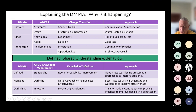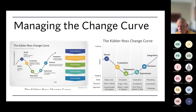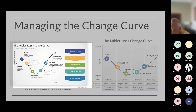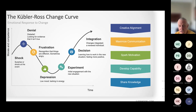So just in terms of closing out, these are back to our core challenges: awareness, desire, and knowledge at the change level. I wanted to share in terms of managing the change curve. I like this understanding of focusing on this area — we've got creative alignment, maximizing communication, sparking motivation, developing the capability, and then sharing the knowledge. This is how we get people from 'why do we need to change,' through shock and surprise and fear and frustration, to a point where they are more positive, getting more involved, handling some of the decisions, and working together on the process. We need to take our people through this journey.